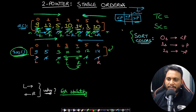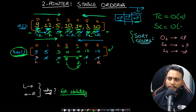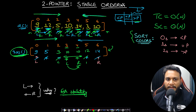The time complexity is O(n) because we iterate through the array exactly once. This is not an in-place algorithm, so the space complexity is also O(n). I hope the entire approach is clear — let's now look at the code.